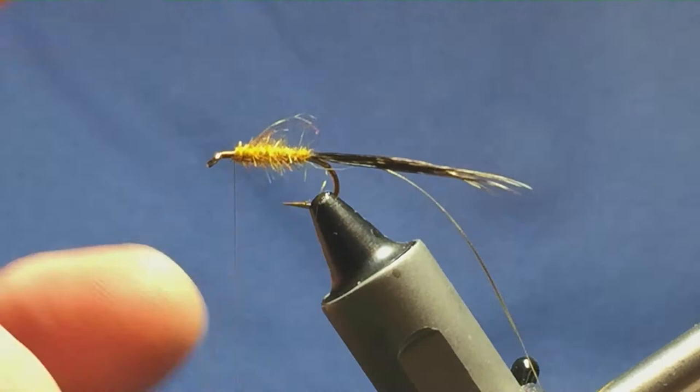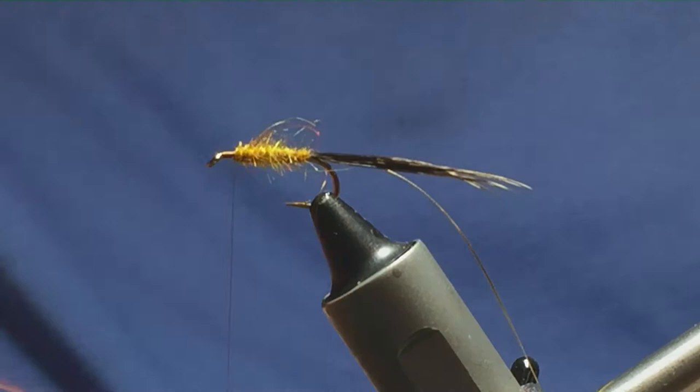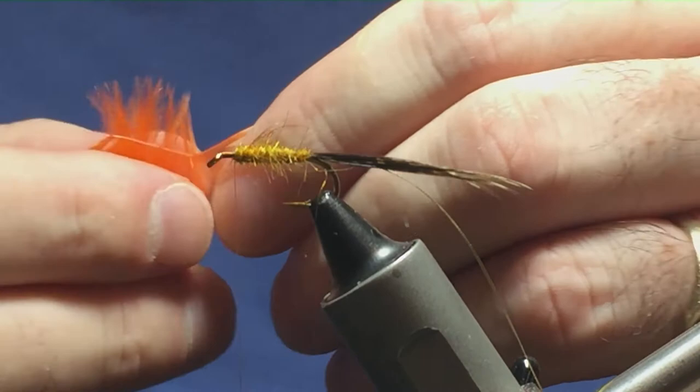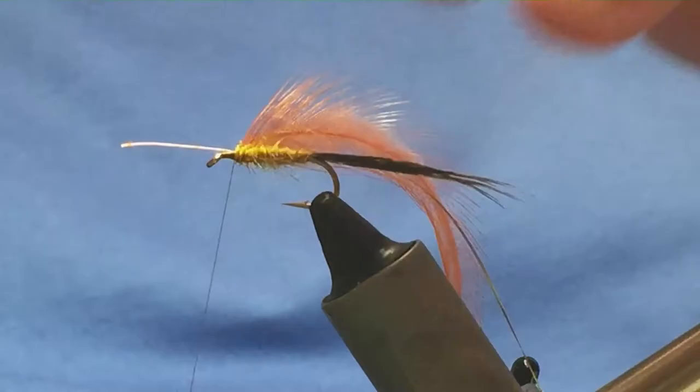Now the body hackle, it's going to be a dyed orange cock saddle hackle. So I'm just going to take out a nice feather here off the cape. And take away all the rubbish at the bottom, strip it away, don't need it. I'm just going to offer this onto my side of the hook. Nice tight turns, tie it in.